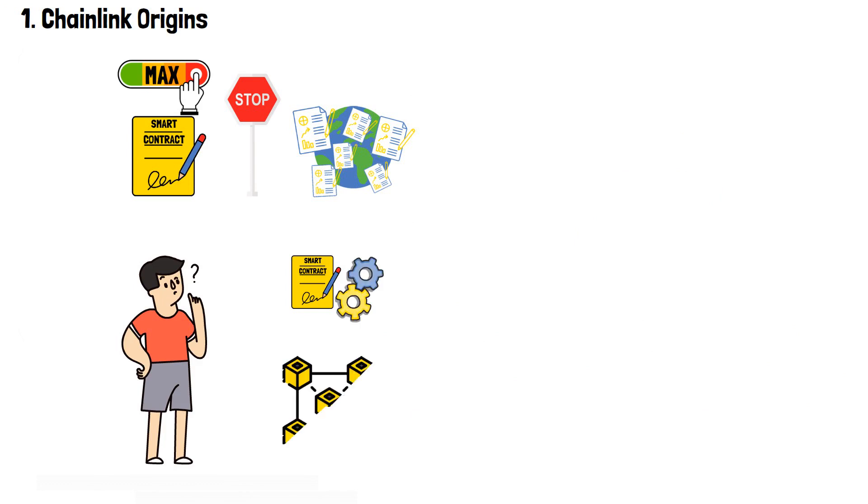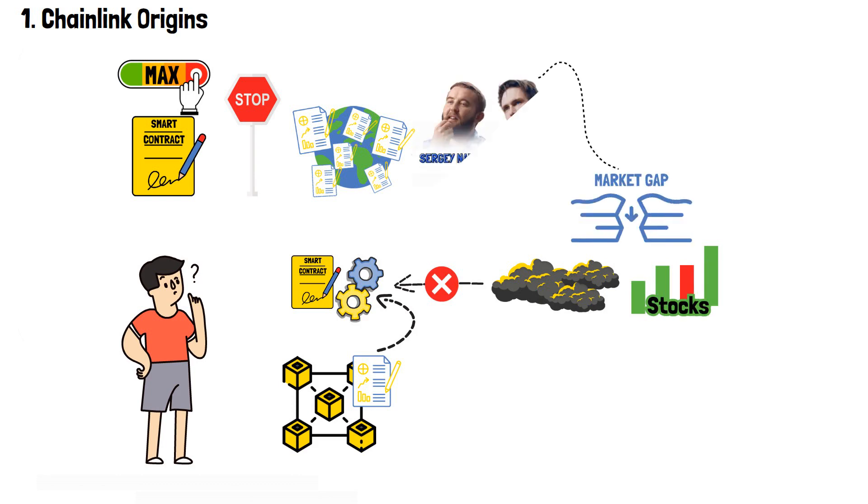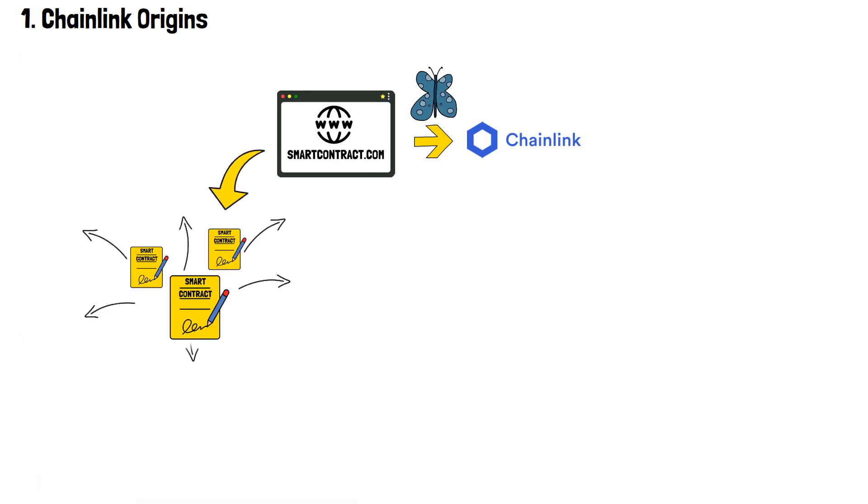Imagine a contract executing based on blockchain data, but ignorant of external events, like weather conditions or stock prices. This was the market gap that the creators of Chainlink aimed to fill. The transformation from smartcontract.com to Chainlink represented an evolution in the founders' vision. While smartcontract.com initially focused on the broader application of smart contracts, Chainlink went all-in on the specific and vital aspect, securing and providing reliable data to these contracts.